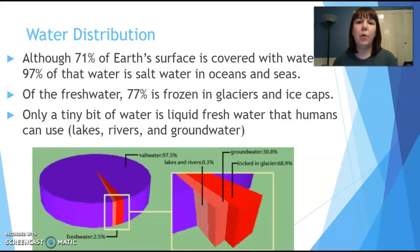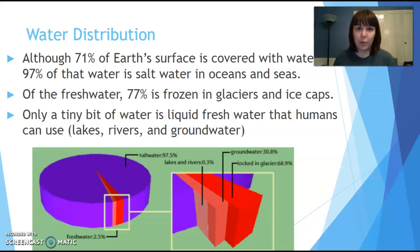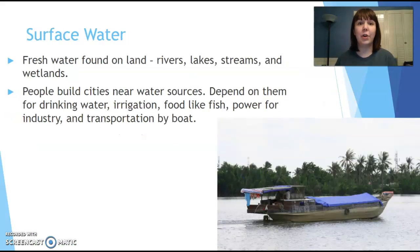Even though 71% of the earth's surface is covered with water, 97% of that is salt water. Only 3% is actually fresh water, and of that tiny 3%, 77% is frozen where we can't really get to it. So what we can use is just a tiny percentage of the total amount of water that exists on earth.